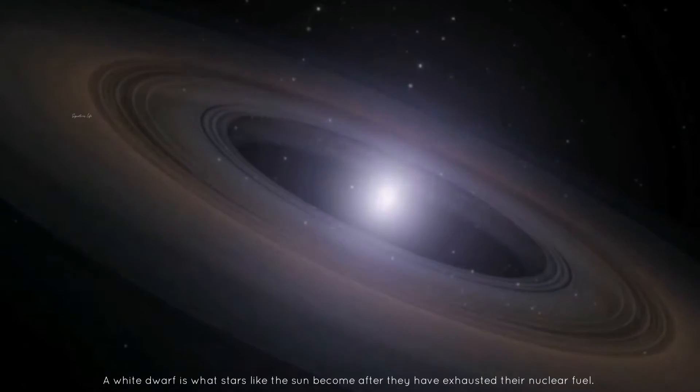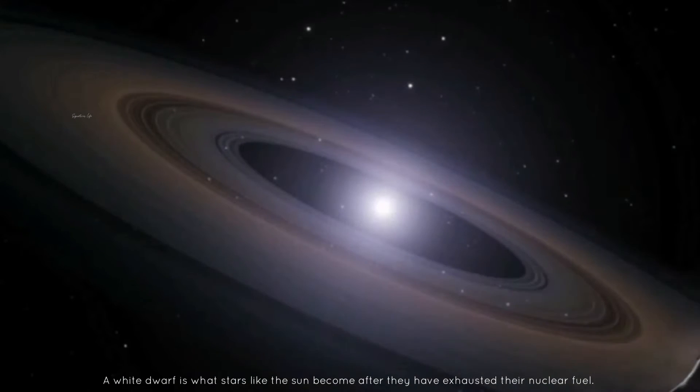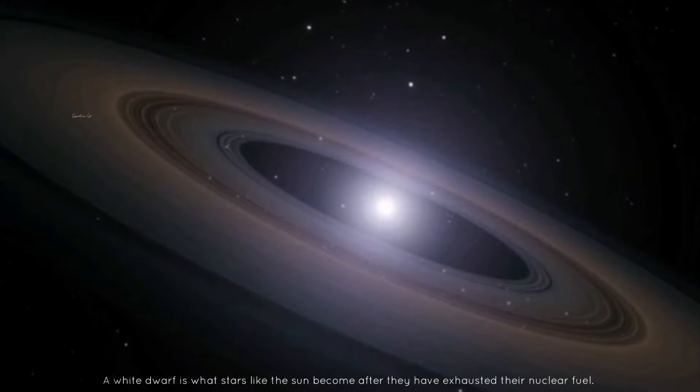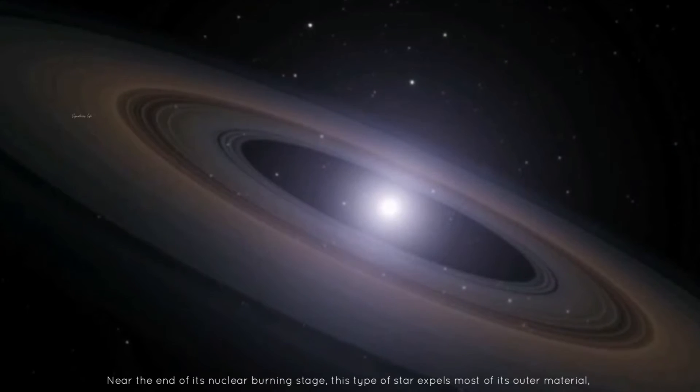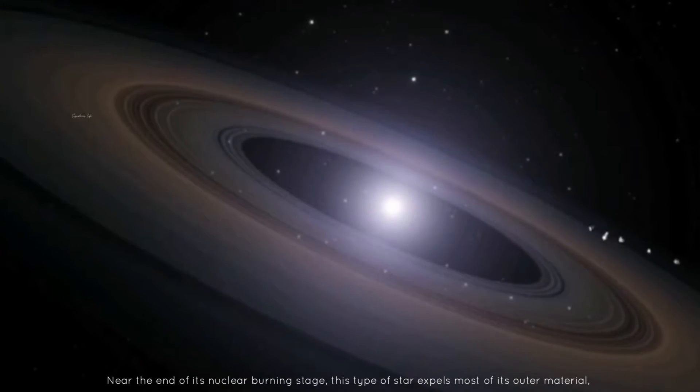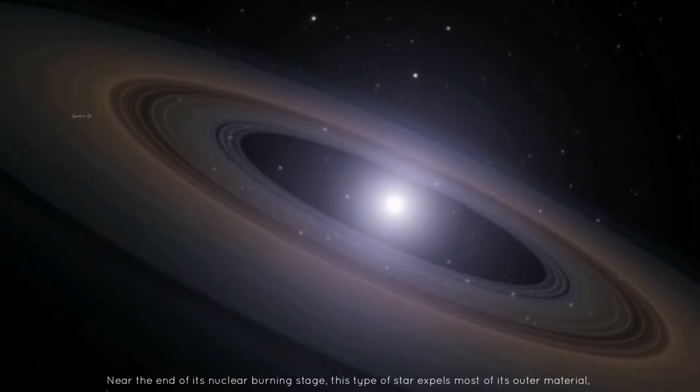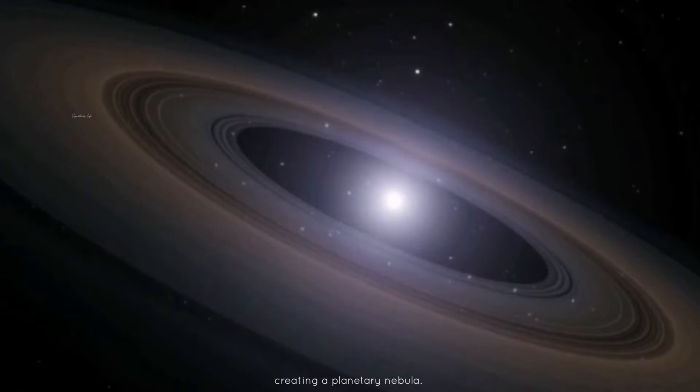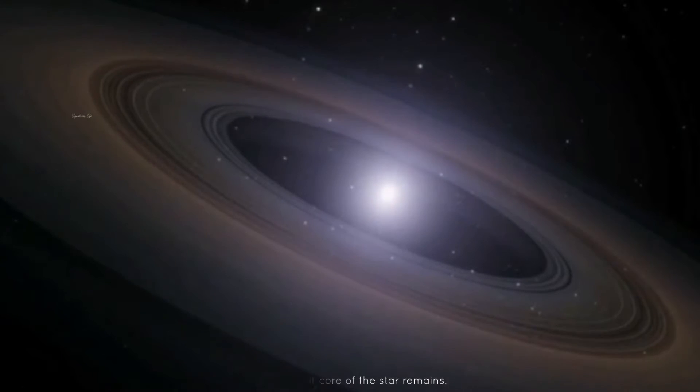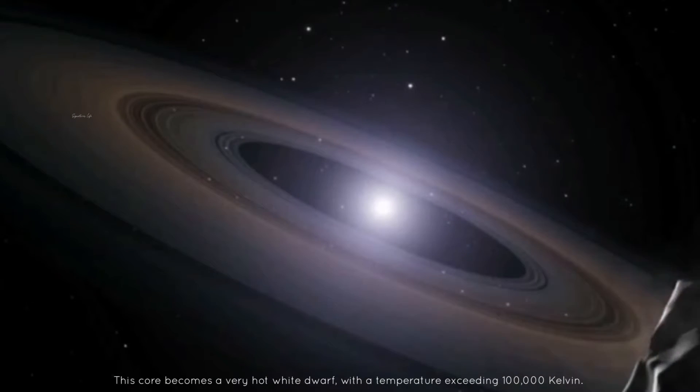A white dwarf is what stars like the sun become after they have exhausted their nuclear fuel. Near the end of its nuclear burning stage, this type of star expels most of its outer material, creating a planetary nebula. Only the hot core of the star remains.